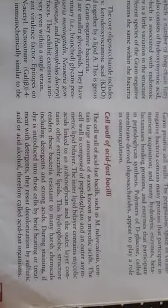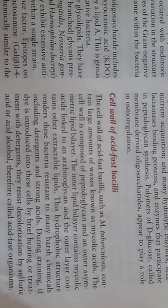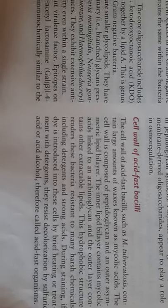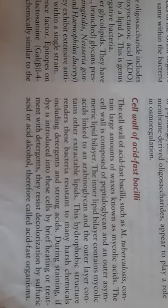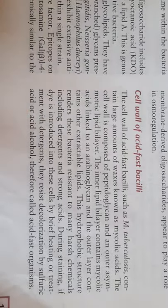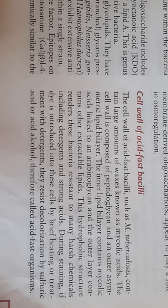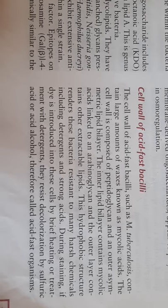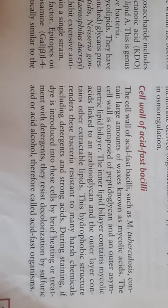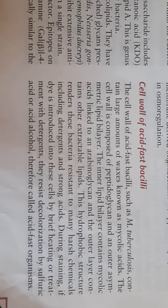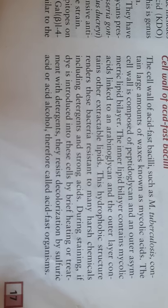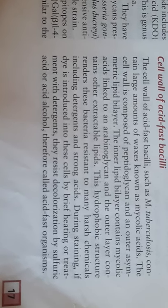The cell wall of acid-fast bacilli, such as Mycobacterium tuberculosis — which is responsible for TB disease — contains a large amount of waxes known as mycolic acid. The cell wall is composed of peptidoglycan and an outer asymmetric lipid bilayer. The inner lipid bilayer contains mycolic acid linked to an arabinogalactan, and the outer layer contains other extractable lipids.